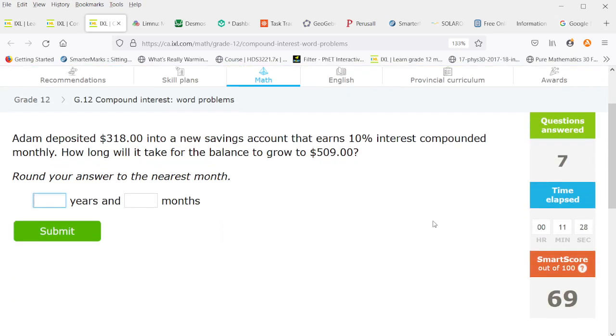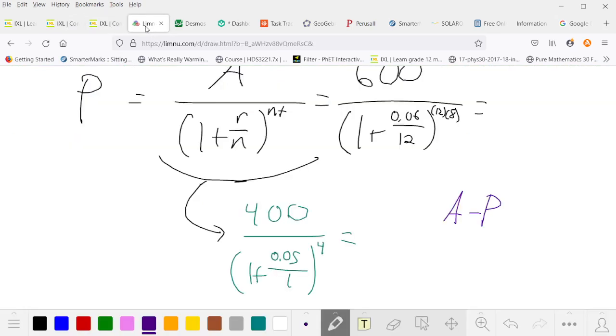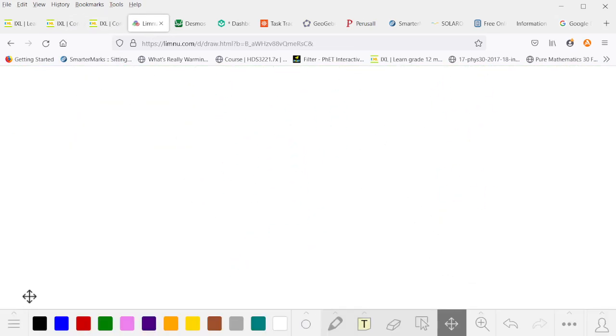So Adam deposited $318 in a new account that earns 10% interest compounded monthly. How long will it take for the balance to grow to $509? So here we're actually asked for the time elapsed. That's going to be different algebra again.